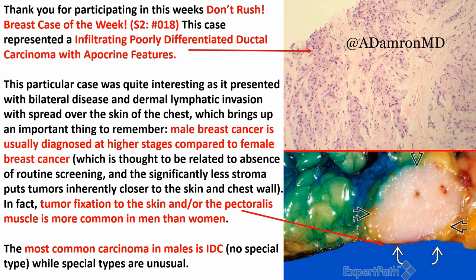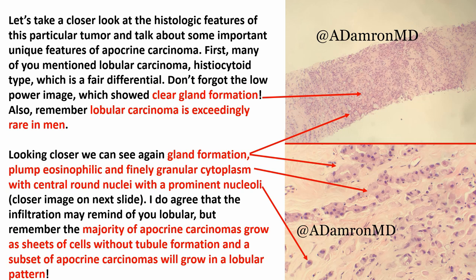Tumor fixation to the skin and/or the pectoralis muscle is actually more common in men than in women, simply because of the inherent smaller breast size. Apocrine carcinoma in the male is extraordinarily rare. The most common carcinoma in males is just going to be IDC, no special type — special types of breast cancer in men are exceedingly rare. But let's talk about some unique features of apocrine carcinoma. It does have clear gland formation in some areas. Some people said it looked lobular — remember, lobular carcinoma is exceedingly rare in men, and it used to be thought it didn't happen in males, though case reports have shown it can occur.